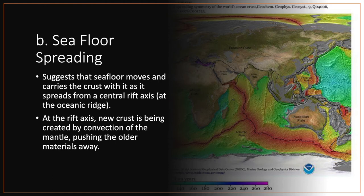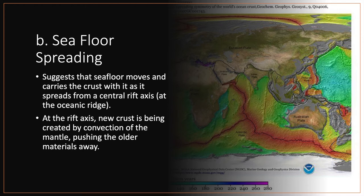Now we move on to seafloor spreading. Seafloor spreading suggests that the seafloor moves and carries the crust along with it. Essentially, there are oceanic ridges forming a rift axis that spreads apart, creating a rift where new crust is formed. These rifts are created by the convection currents of the mantle pushing older material away underneath. This was proposed by Harry Hess in 1960, and this concept was drawn from extensive mapping of seafloor topography, initially done for military tactics — to detect submarines like the German U-boats.